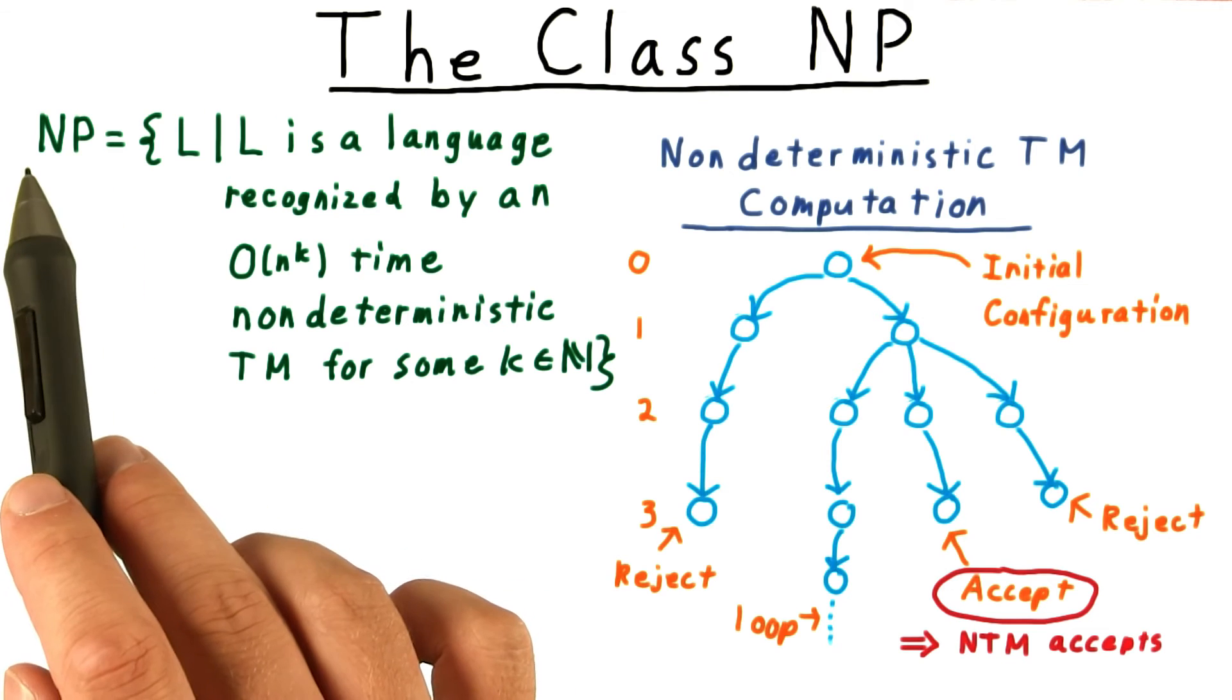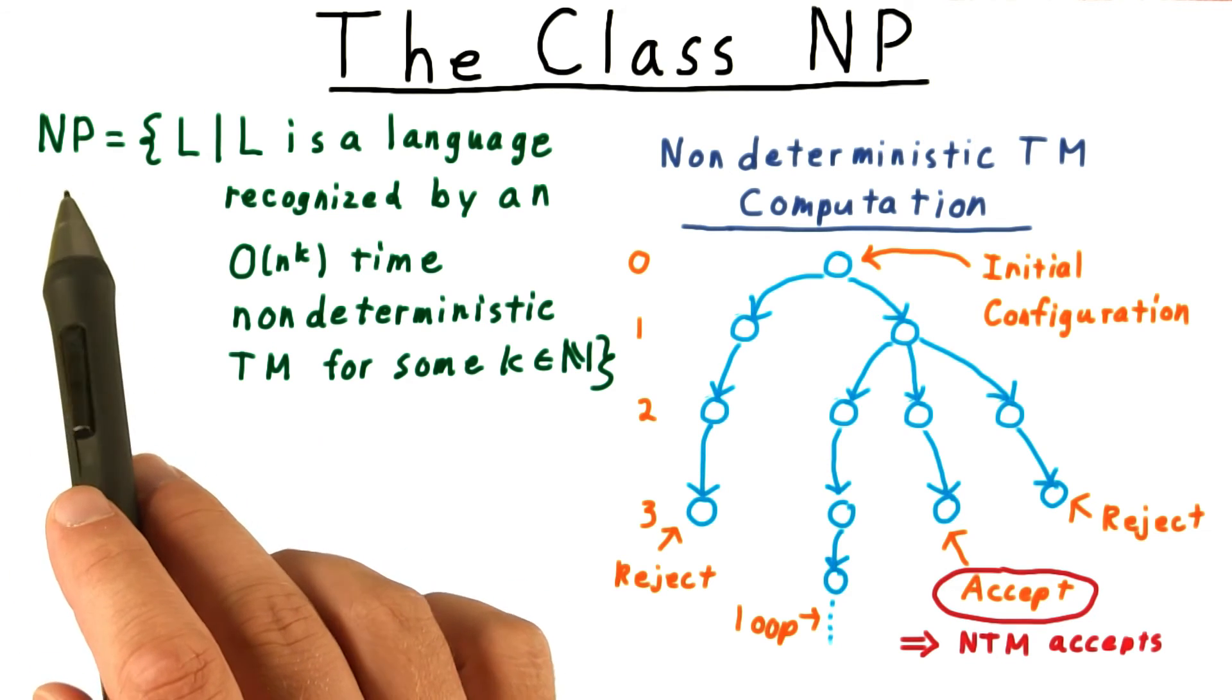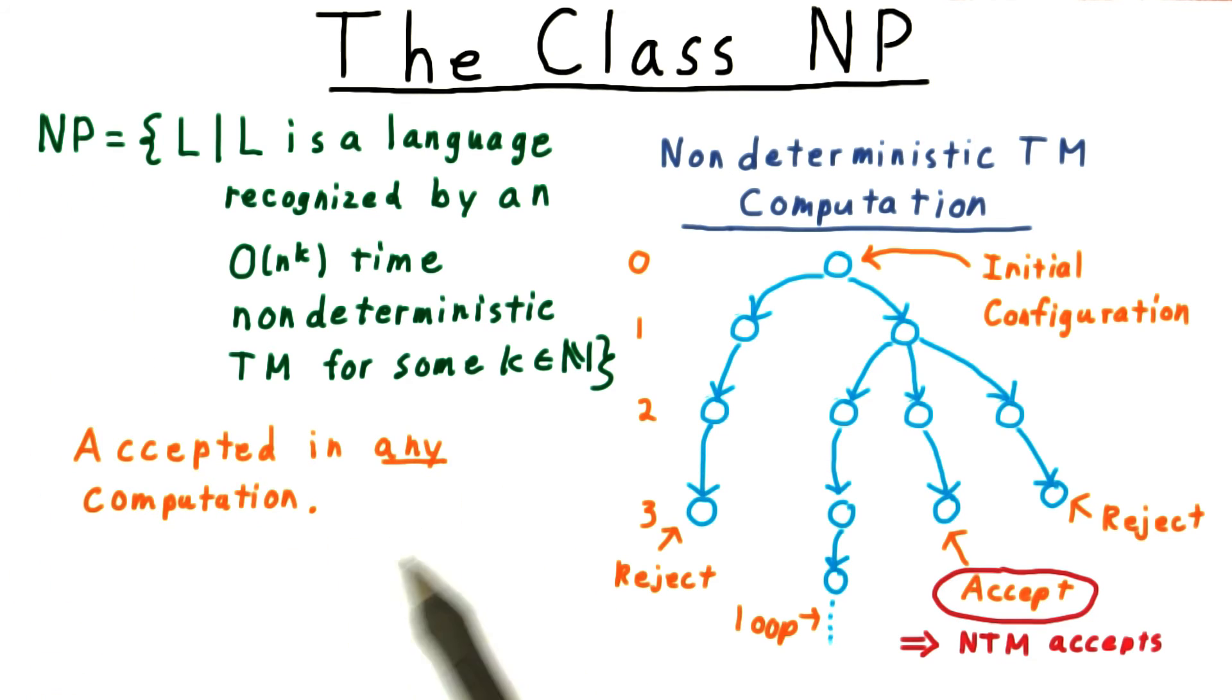NP stands for non-deterministic polynomial time. Non-determinism can be a little confusing, but it helps to remember that a string is recognized if it leads to any accepting computation, i.e., any accepting path in this tree.